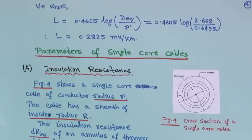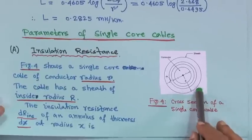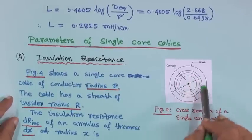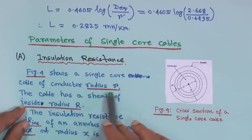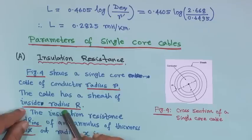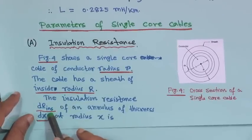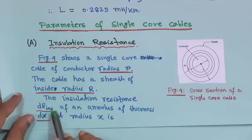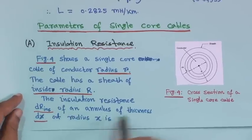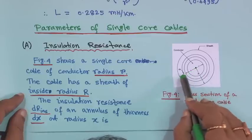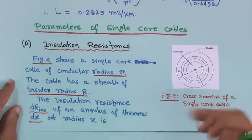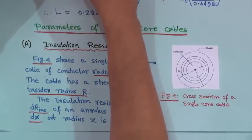Next, let us come to the parameters of a single core cable — specifically insulation resistance. This is a single core cable of conductor radius r, and the cable has a sheath of inside radius R. The insulation resistance dR_ins of an annulus of thickness dx at radius x is considered — an annular ring of thickness dx, the same philosophy as for inductance and capacitance calculation.